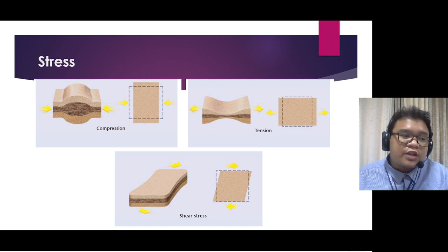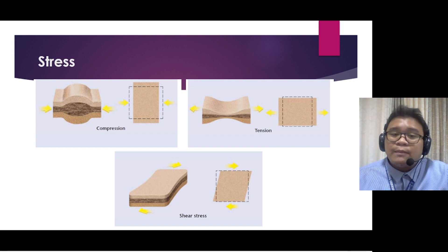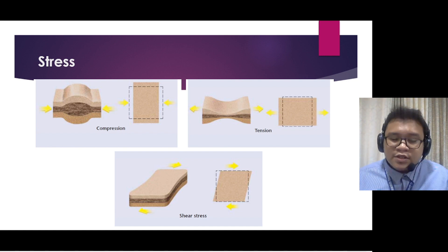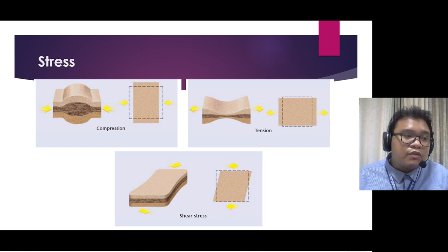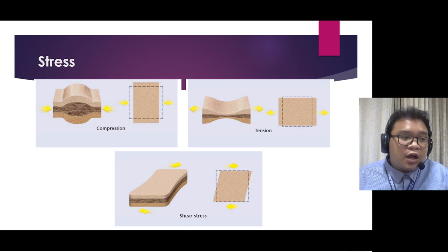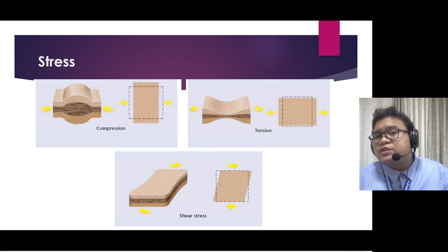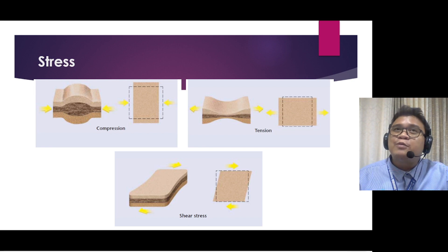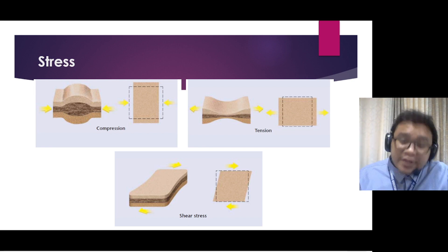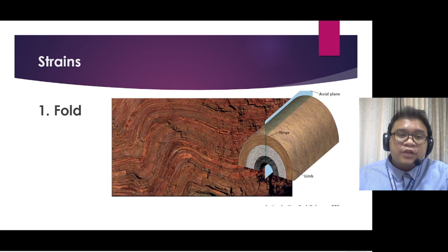For shear stress, the third type of stress, it is a stress that distorts a body by pushing parts of the body in opposite directions. The sheared rocks bend, twist, or break apart as they slide past each other. Shear stress is actually very common in transform plate boundaries. Technically these types of stresses can also be associated with plate boundaries.